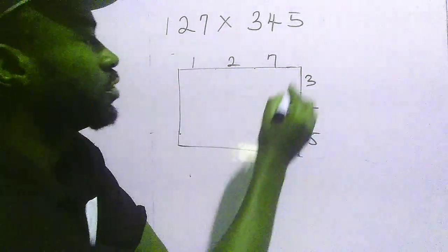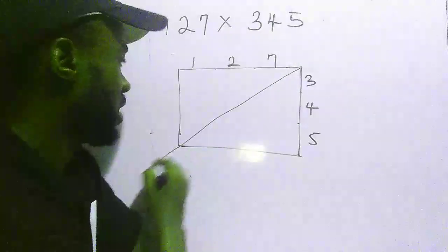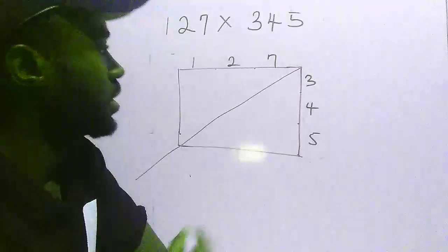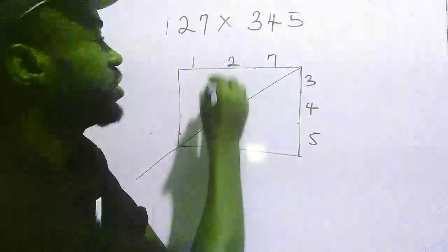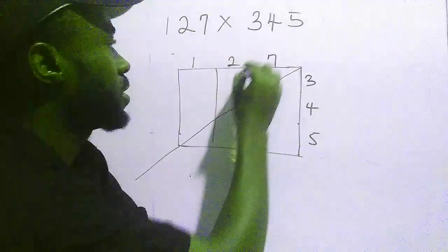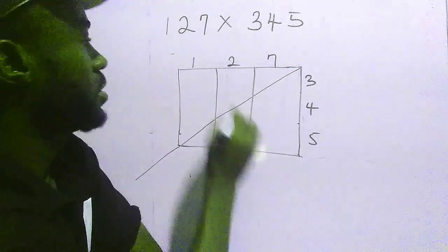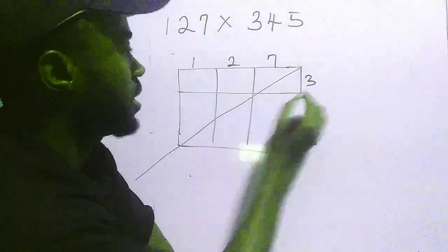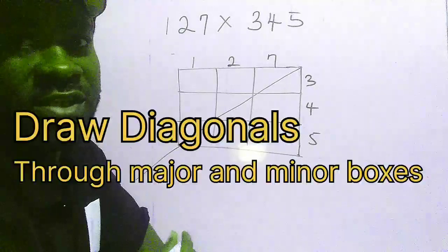Now I'll divide this box and create the major diagonal. Because there are three digits, I'll divide it into three parts, both vertically and horizontally.